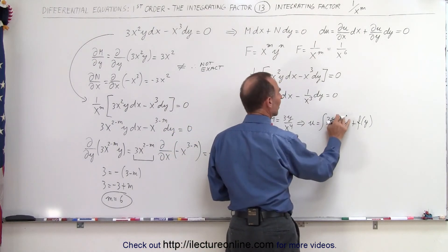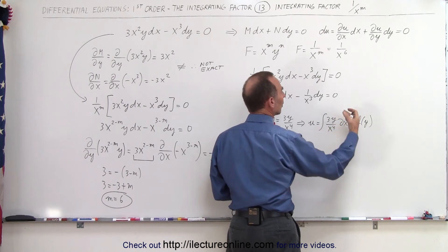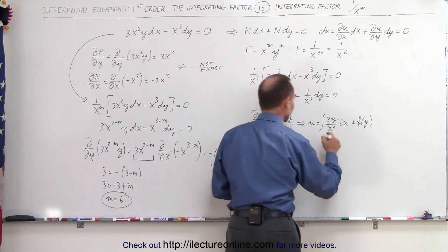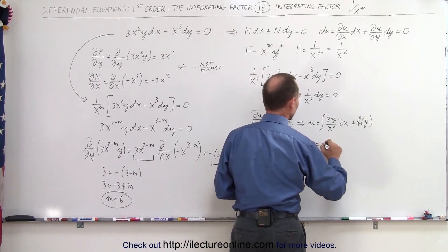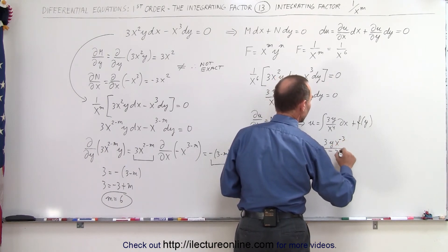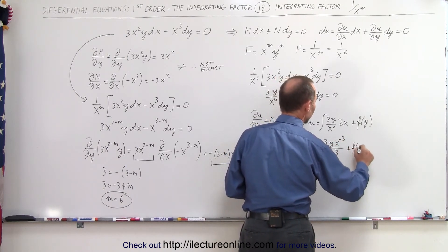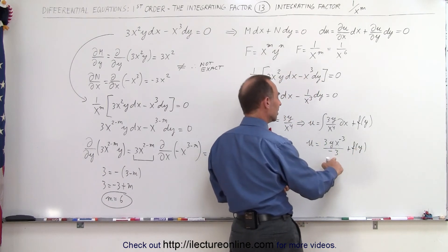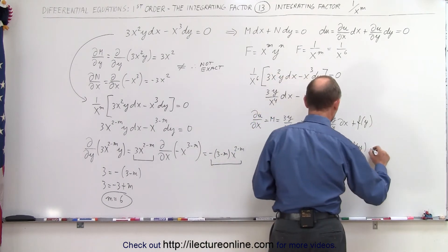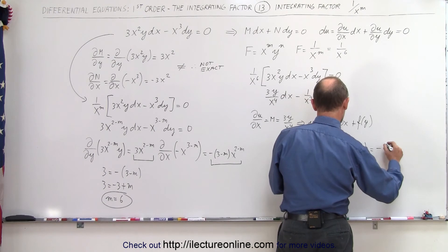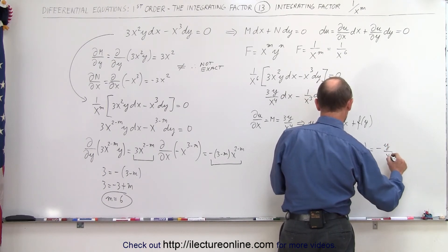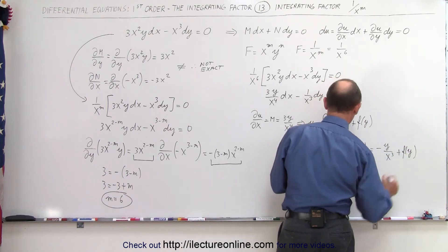Notice that 3y over x to the 4th is the same as 3y times x to the minus 4. Since x is the variable, we add 1 to the exponent, giving x to the minus 3 divided by minus 3. So u equals 3y times x to the minus 3 over minus 3 plus a function of y. The 3s cancel, leaving u equals minus y over x cubed plus some function of y.